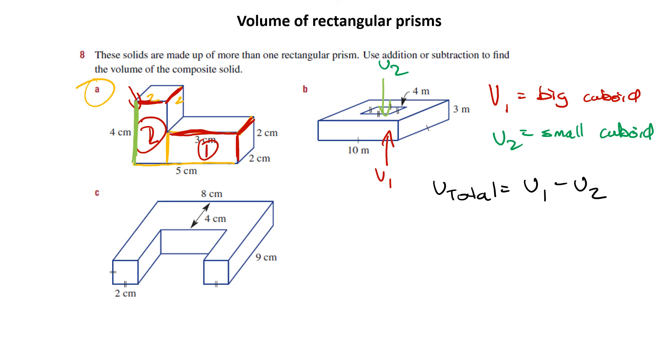And V total is going to be equal to V1, the big cuboid, minus V2. And if you think about it, I'll let you work out that if that's a subtractive type one or adding two composite solids or adding or subtracting two composite solids to work out a thing, but I'll give you a go, let you work out C.